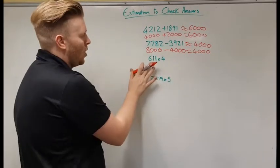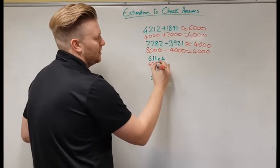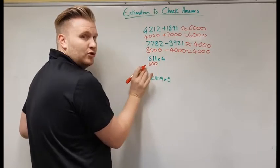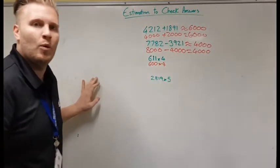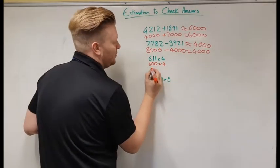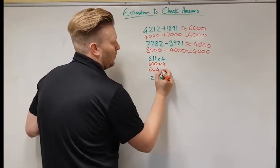What I'm going to do with my 611 is, again, change it so there's only one digit that isn't a zero. So I'm going to round it to 600. That's the closest 100. And times that by 4. Now what I'm going to do again, to make this sum easier, I'm going to do 6 times 4.